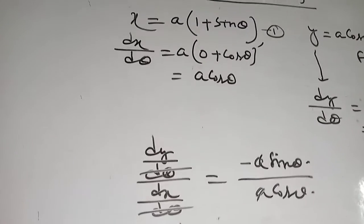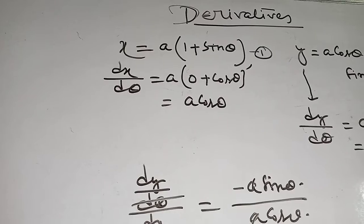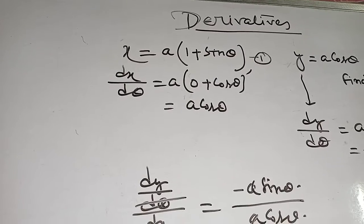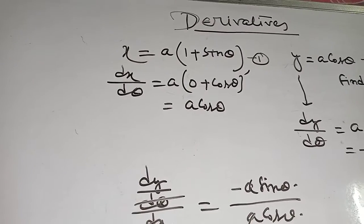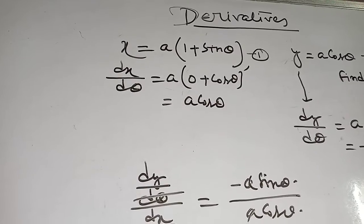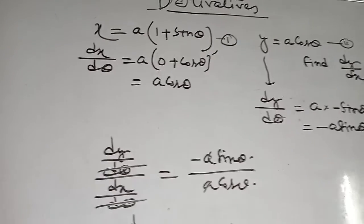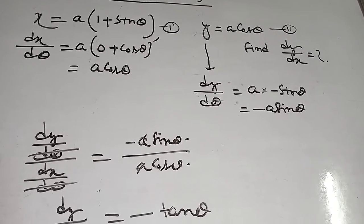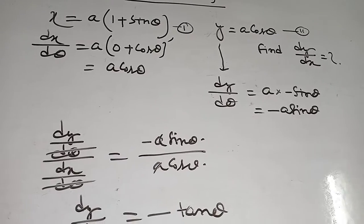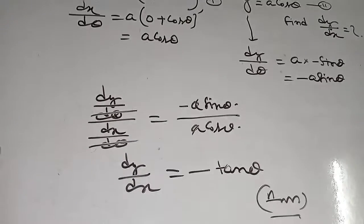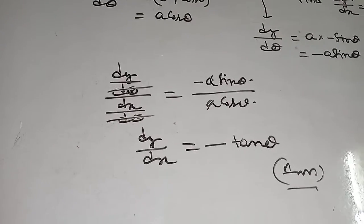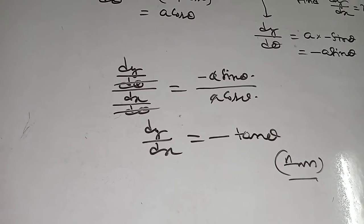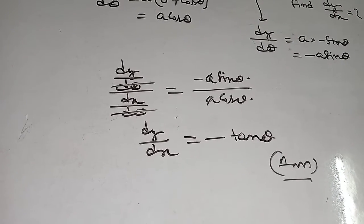Now, at first, x equal to a into 1 plus sin theta. Both side differentiation with respect to theta, then it will be dx d theta equal to a into d dx of 1 means 0 plus d dx of sin theta means cos theta, then it will be a cos theta. Now, dy d theta equal to a into cos, so dy d theta equal to minus a sin theta. Divide dy d theta by dx d theta, then it will be equal to minus a sin theta by a cos theta. A cancels.